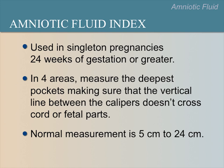In pregnancies older than 24 weeks gestational age, we calculate the amniotic fluid index, or AFI. With this method, we measure the depth of four pockets and add them together for an AFI score. These pockets are measured in the same way as the MVP, and the vertical line cannot cross the cord or fetal parts. The normal AFI range is between 5 and 24 centimeters.